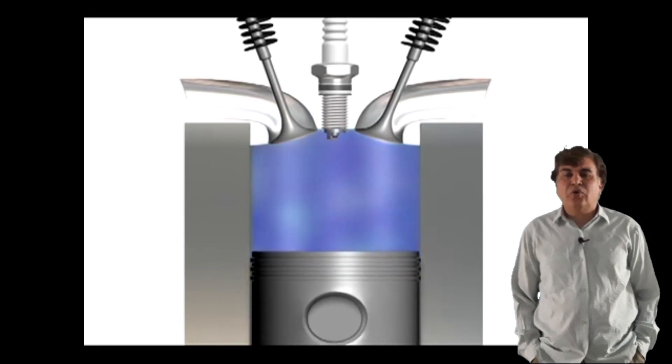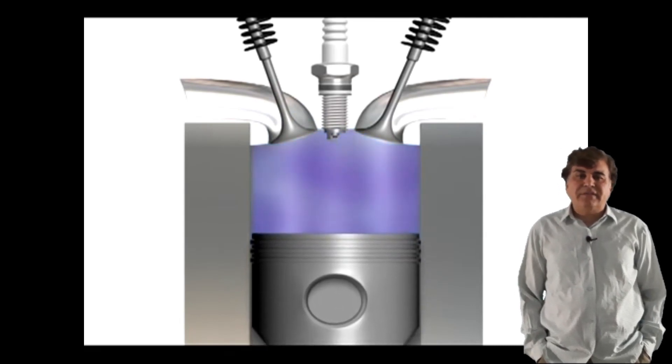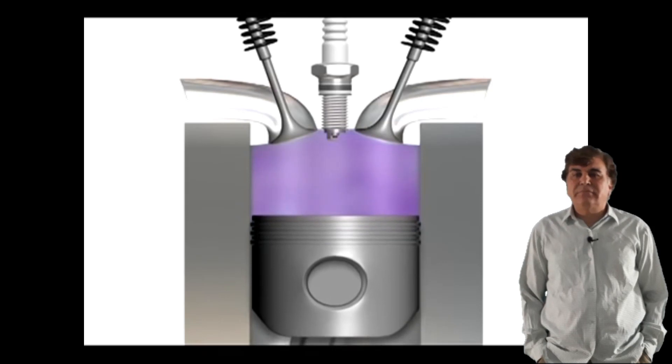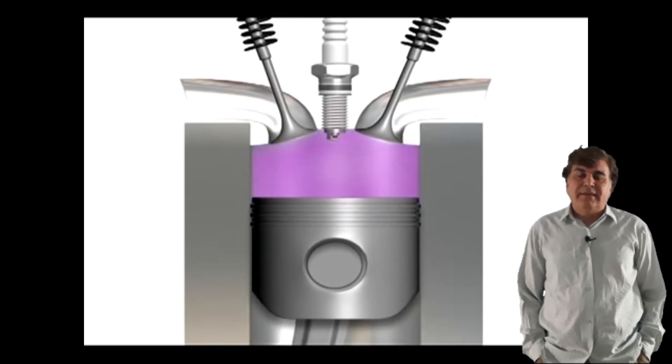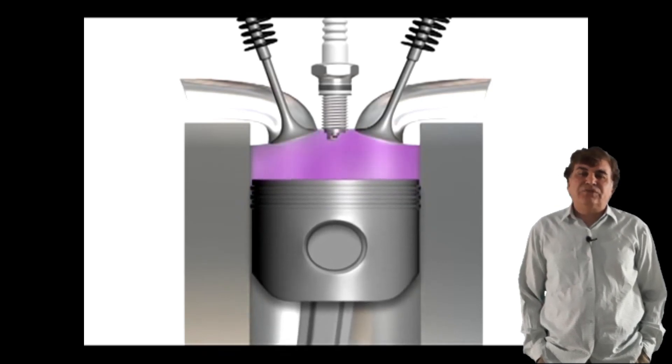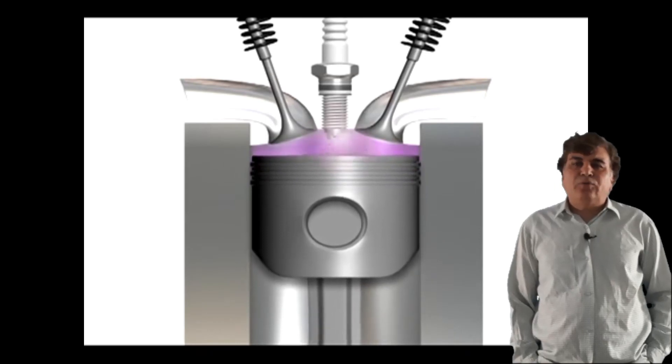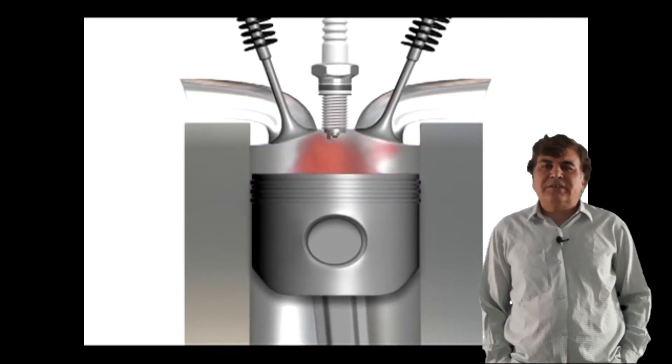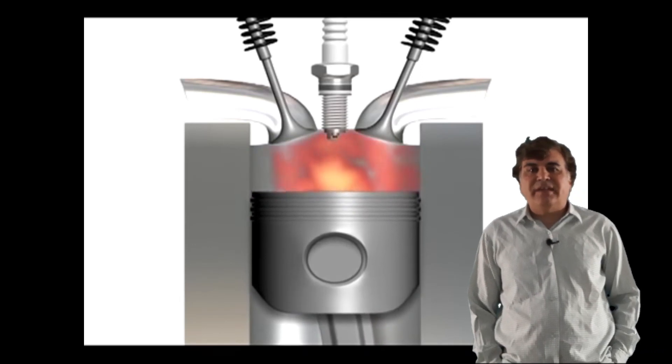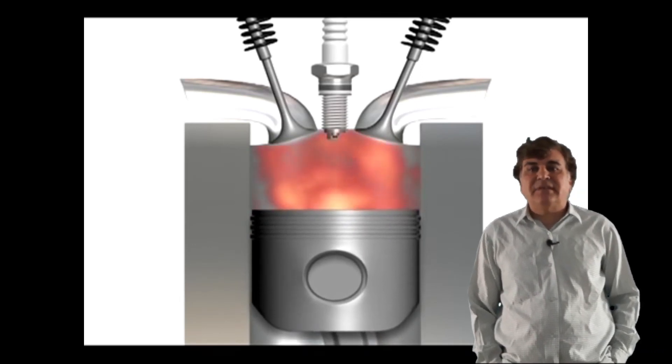And the piston compresses the mixture by moving upward. This is called the compression stroke. Right at the upper turning point, the igniting plug sparks, causing an explosion in the mixture which forces the piston in the downward direction. This is called the power stroke.